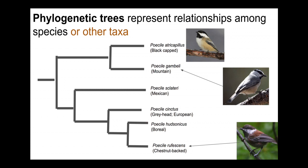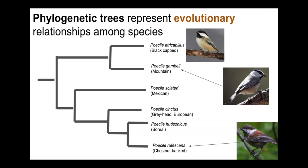Often we put species on the tips of our phylogenetic trees, but really any taxa or any taxonomic group can be placed — such as individual patients, individual cells, subspecies, species, populations, genera, even families or other taxonomic groups. The key is we're talking about evolutionary relationships. We're not interested in how similar organisms look or how similarly they behave; we're interested in understanding the evolutionary relationships among species.